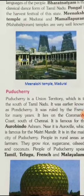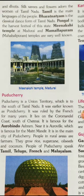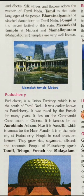Now we will know about Puducherry. Puducherry is to the south of Tamil Nadu. It is a union territory. Puducherry was earlier known as Pondicherry. It was ruled by the French for many years. It lies on the Coromandel coast, south of Chennai. It is famous for the Aurobindo Ashram. Near it is Auroville, which is famous for the Matrimandir.